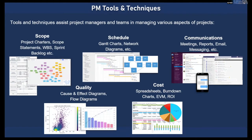To help manage the scope of a project, we talked about the work breakdown structure as a tool and technique for defining scope. But project charters, scope statements, and the sprint backlog defines the scope for a sprint. So these are all tools and techniques that can be helpful for defining the scope for a team.